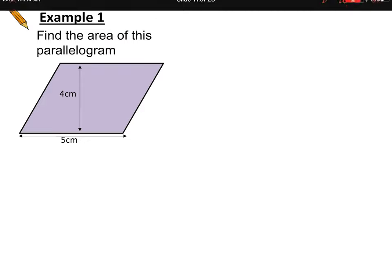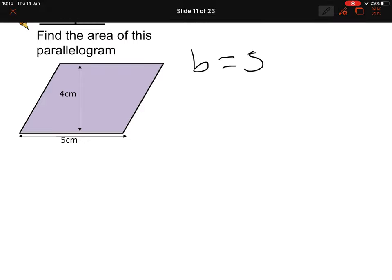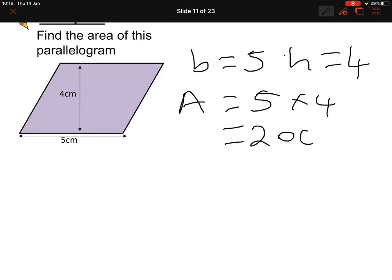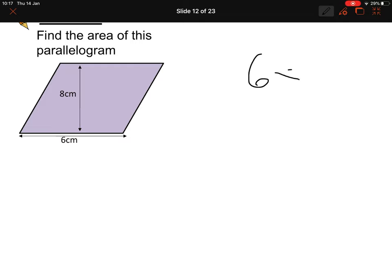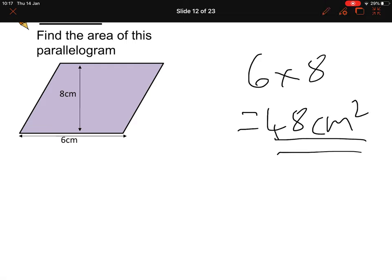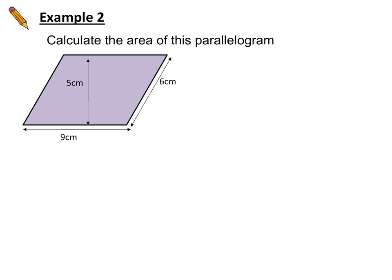Example 1: the base is 5 and the perpendicular height is 4, so area = 5 × 4 = 20 cm². Copy this down. For the next practice question, the area = 6 × 8 = 48 cm². Well done if you got that.